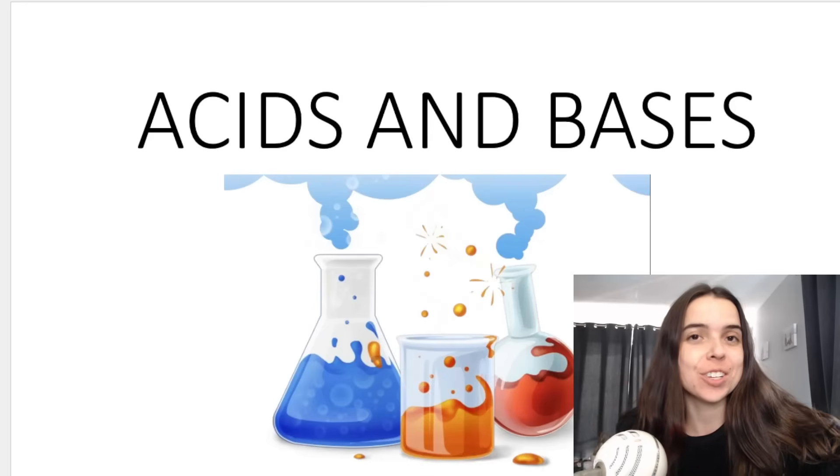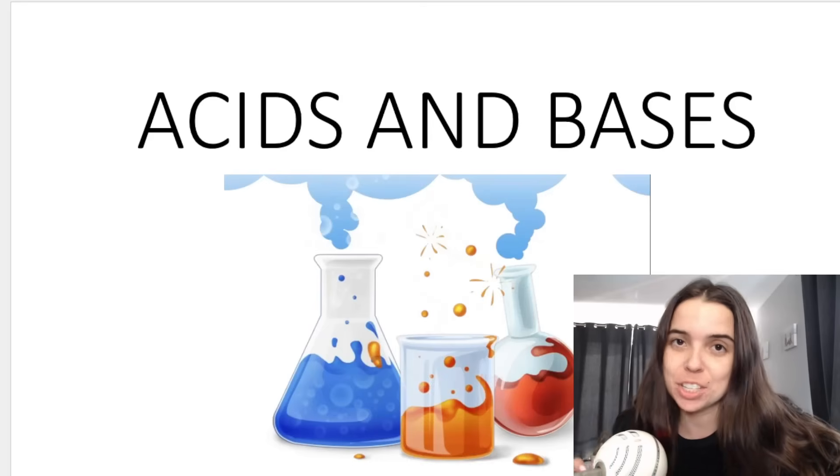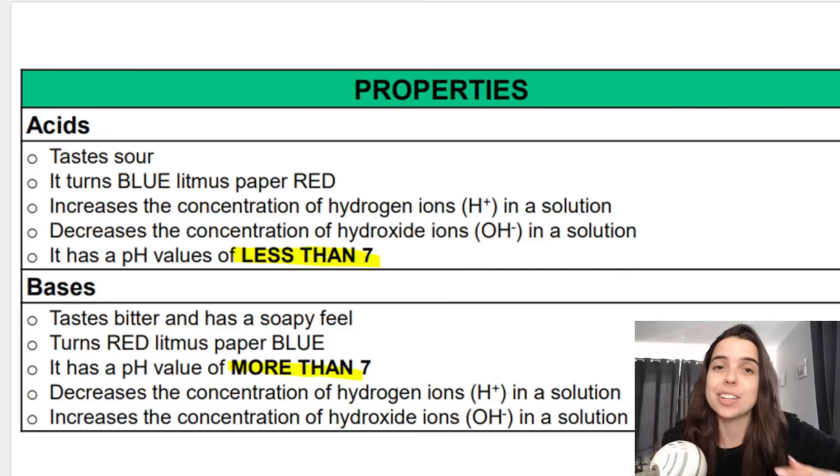Acids and bases are an important section in grade 11 and grade 12 chemistry. Up until this point in grade 8 or grade 9 natural sciences, you may have defined an acid as something that tastes sour. You might know that it has a pH of less than 7, and for bases you may have learned that it tastes bitter or has a soapy feel and has a pH value of more than 7.